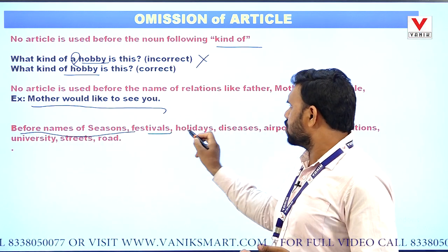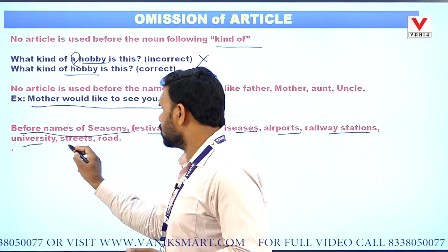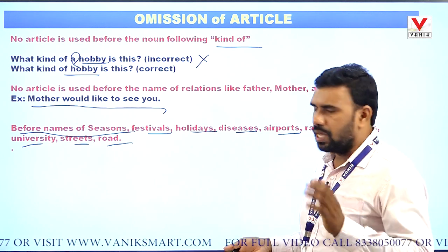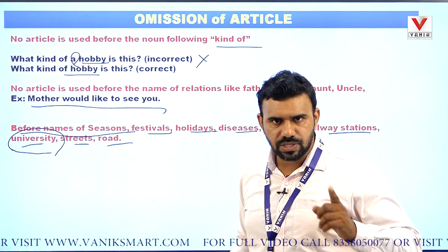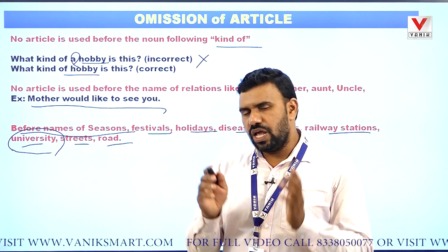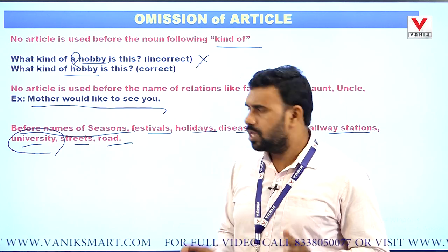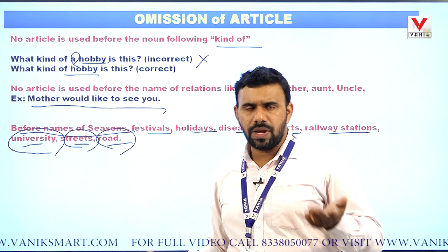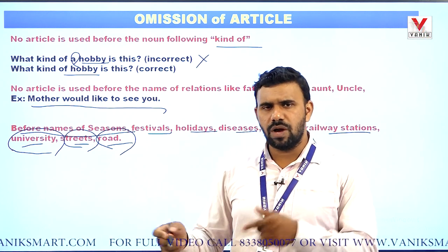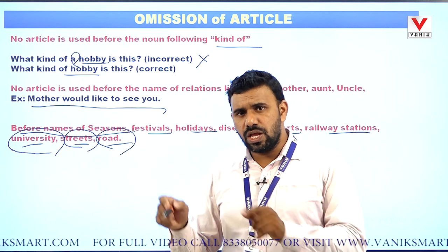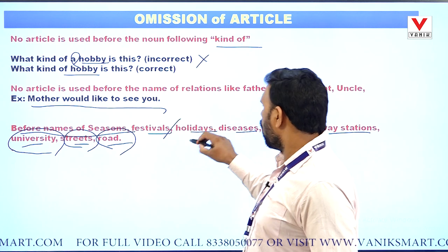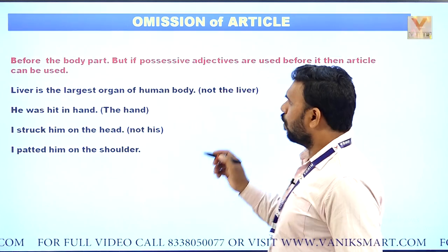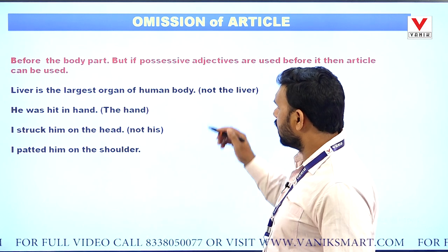Before names of seasons, festivals, holidays, days, airports, railway stations, universities, streets, and roads — these are all proper nouns, so no article is used. Never say 'I have passed from the Ravenshaw University' — always say 'I have passed from Ravenshaw University'. We never say 'the Utkal University', always say 'Utkal University'. Street and road names also take no article — we say 'Mahatma Gandhi Road', not 'the Mahatma Gandhi Road'.